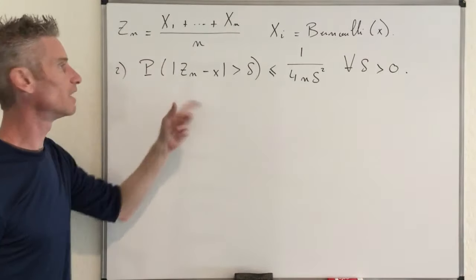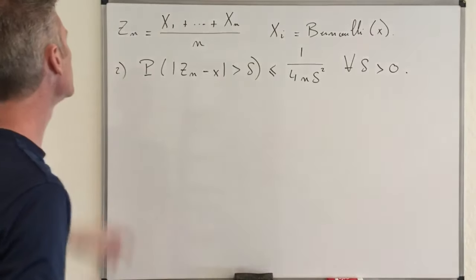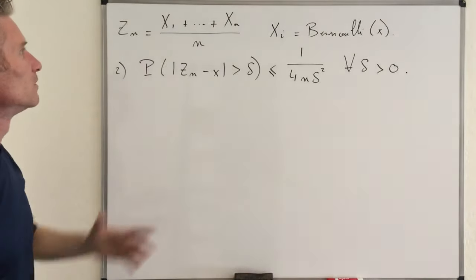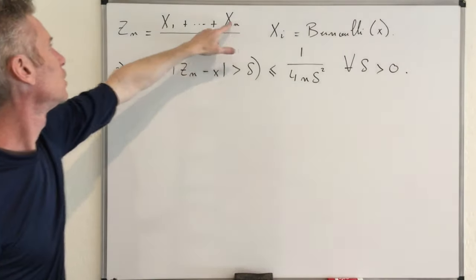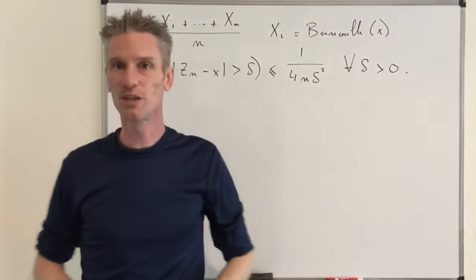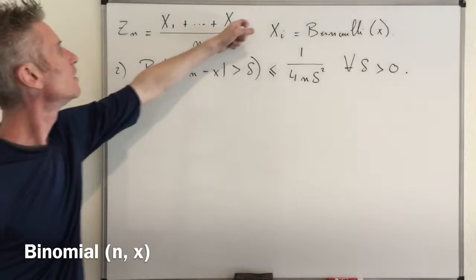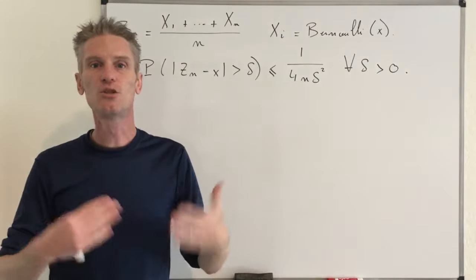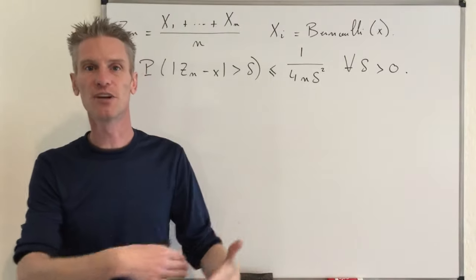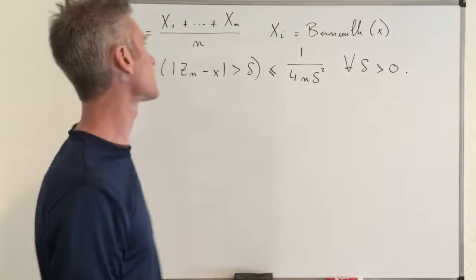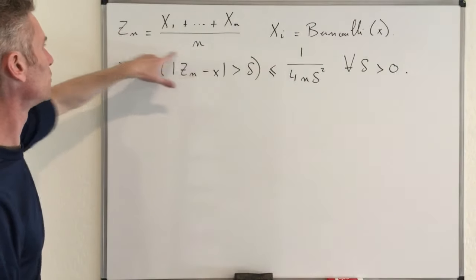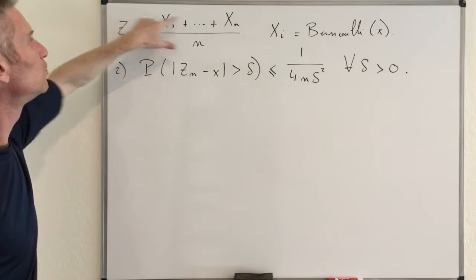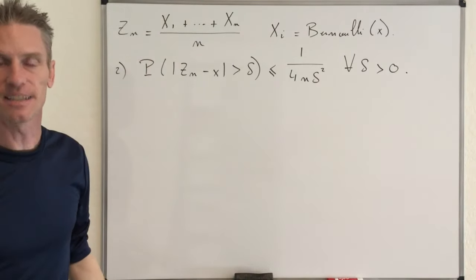So let's compute the expected value and variance of Zn. As mentioned in Step 1, the sum is a binomial random variable, so the expected value of the sum in the numerator is n times x. The expected value of a Binomial(n, x) is just n times x. With the 1/n factor, the expected value of Zn is nx/n, which equals x. So x is indeed the expected value of Zn.